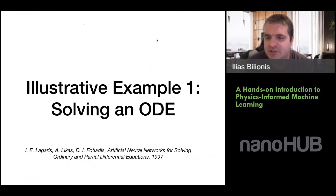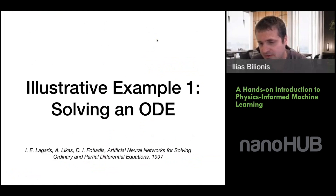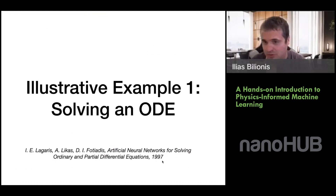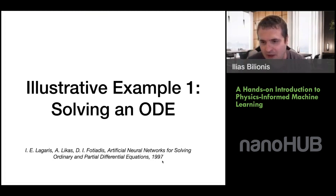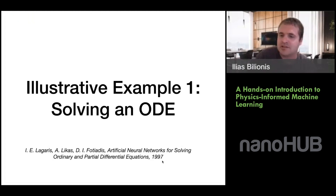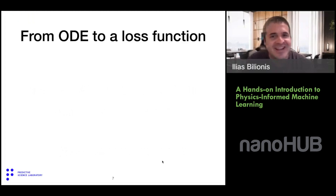Now I'll start with an illustrative example showing how you can use neural networks and loss functions to solve an ordinary differential equation. This paper was written in 1997 — it's 24 years old and was completely ignored for basically 20 years with no citations whatsoever. Then all of a sudden the whole thing got revived, and the paper now probably has thousands of citations all within the last two years. Something to remember: your work may be recognized a little later.